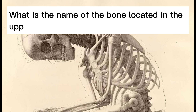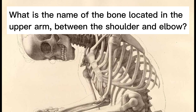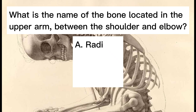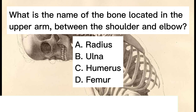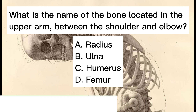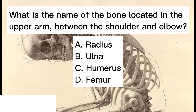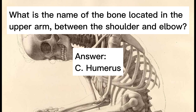What is the name of the bone located in the upper arm, between the shoulder and elbow? A. Radius. B. Ulna. C. Humerus. D. Femur. Answer: C. Humerus.